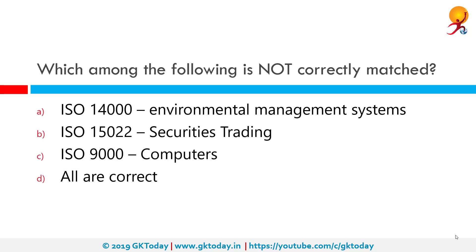Which among the following is an incorrect match? The correct answer is ISO 9000 matched with computers. ISO 9000 is a family of standards for quality management systems and is not particularly related to computers.